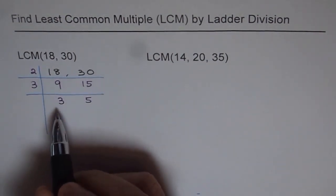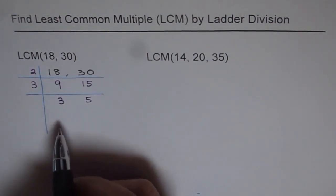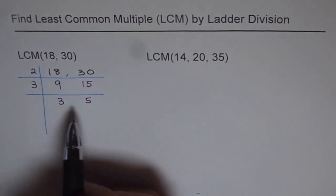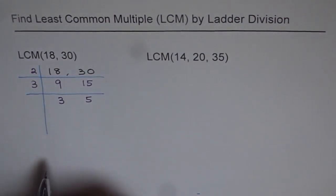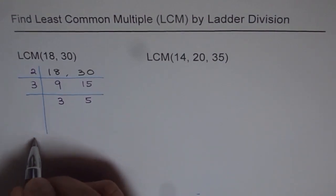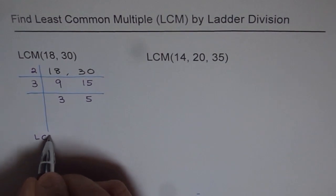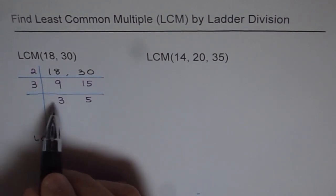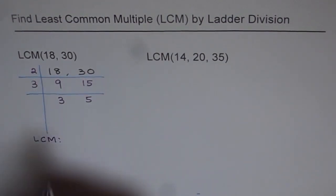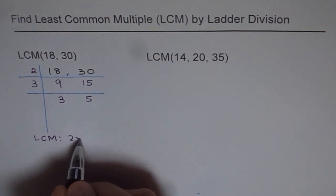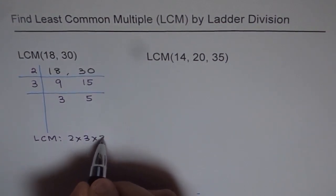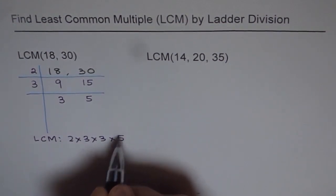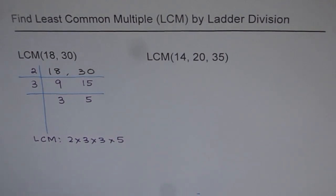Now we have all the prime factors here: 2, 3, 3, and 5. That gives us the least common multiple between the two given numbers. We can get our answer as LCM equals the product of these prime factors: 2 times 3 times 3 times 5.